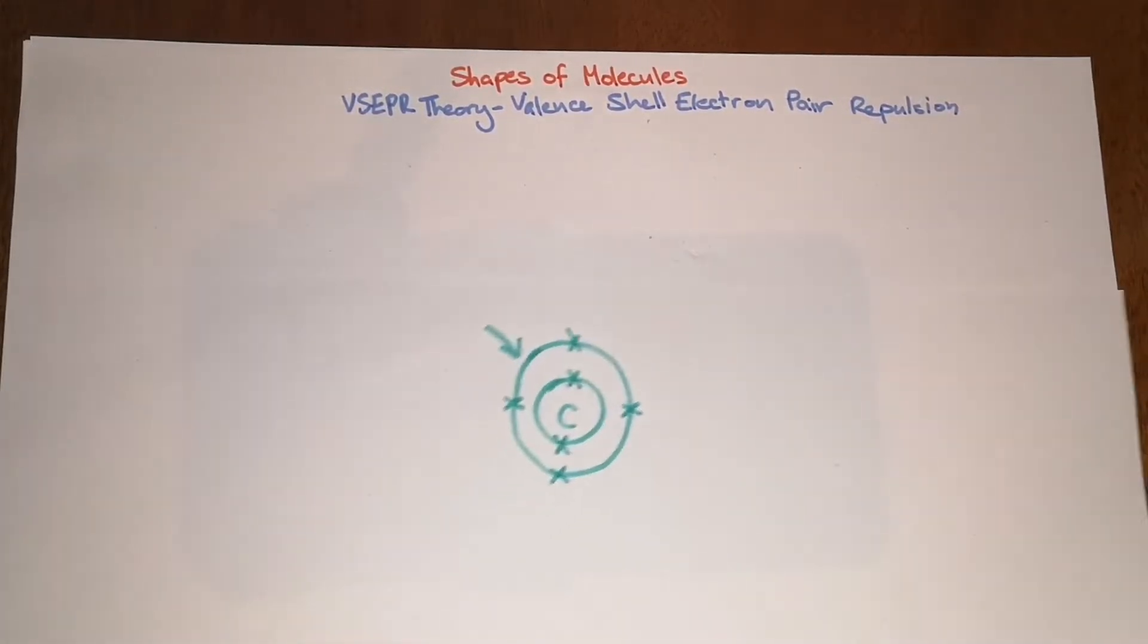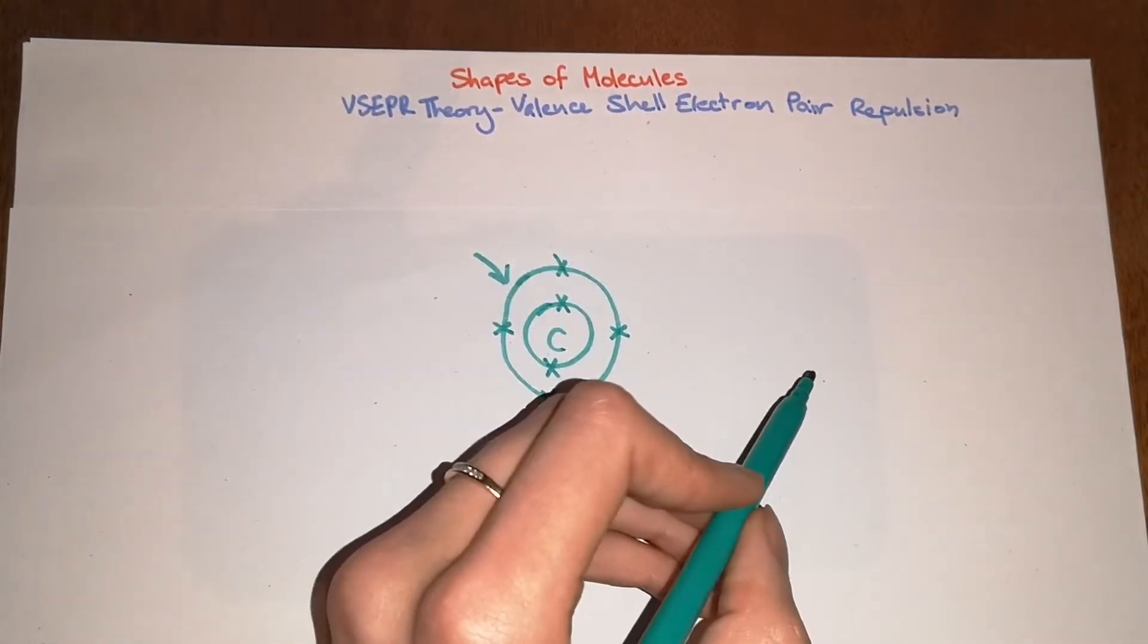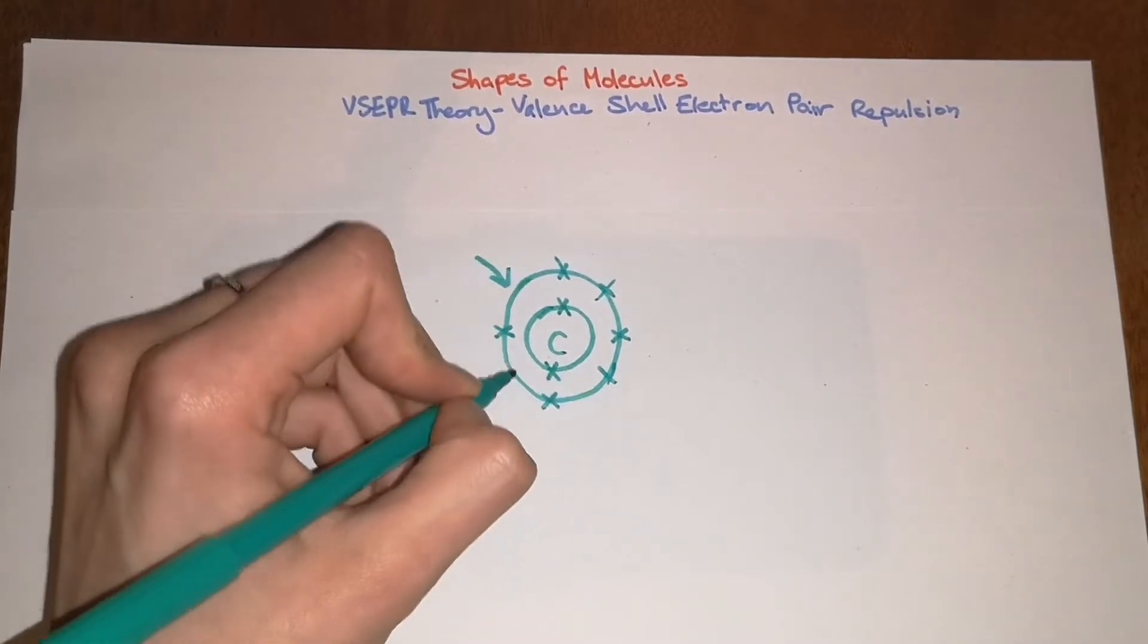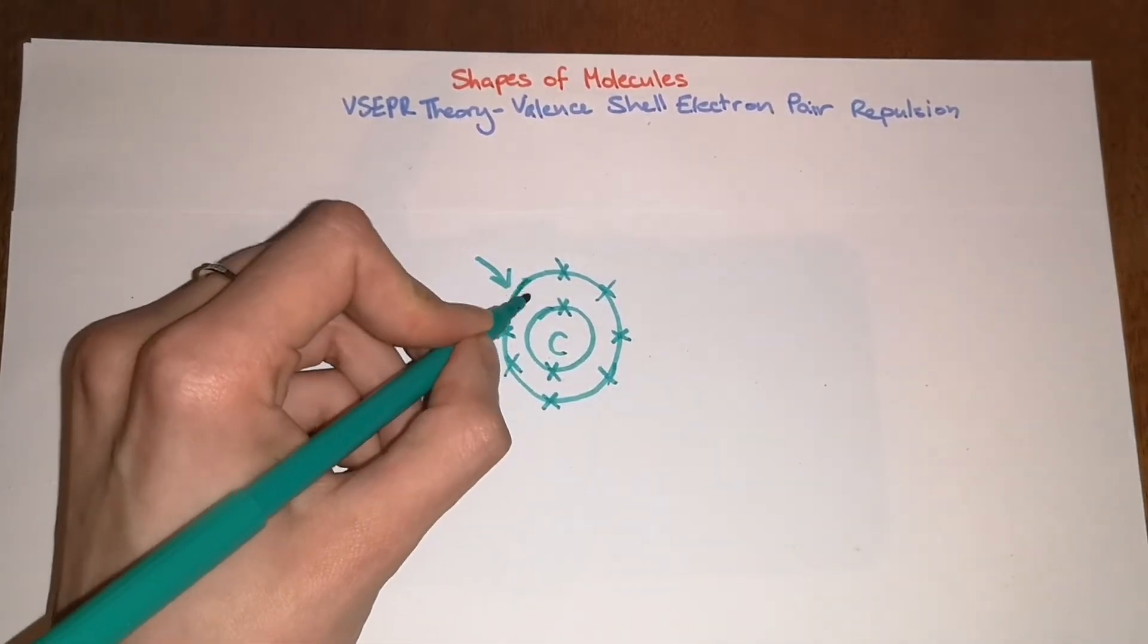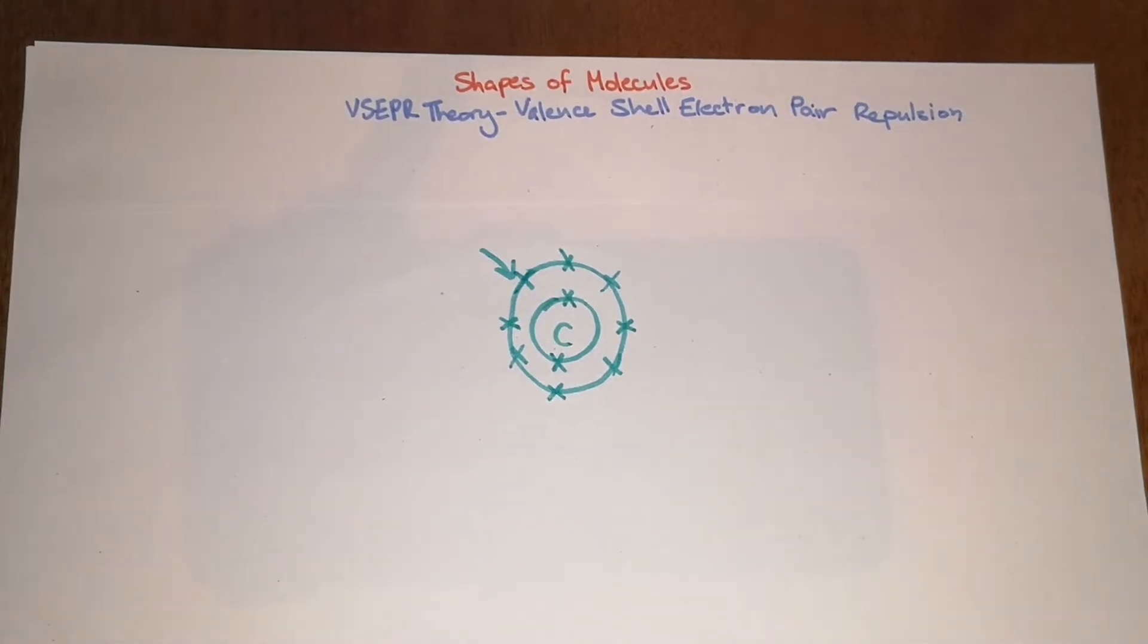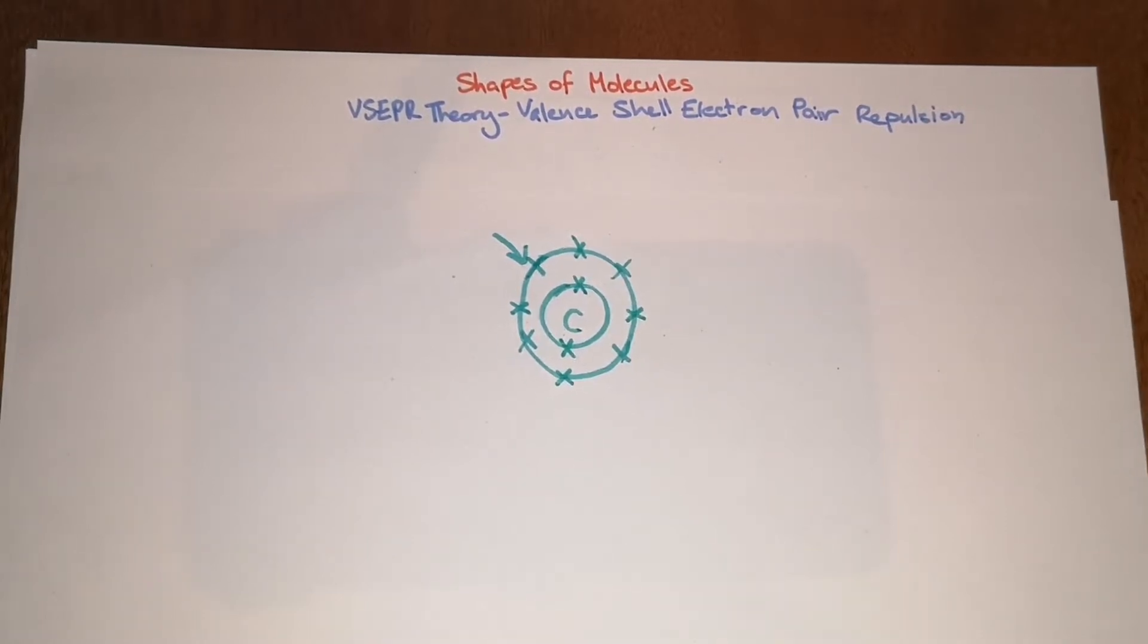Basically what this theory allows you to do is if you know how many electrons are in the valence shell of an atom after it's made its bonds, usually you'll have eight, for example you might have four. You'd have carbon with four bonds to something else and then it will have a full outer shell. This will allow you to predict based on how many atoms are attached to another atom what shape that molecule will take.